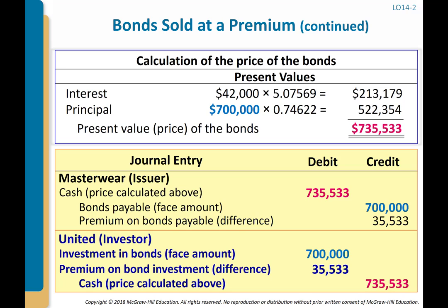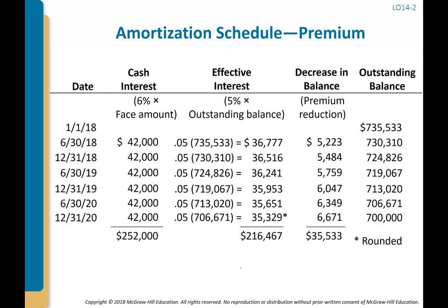At issuance of the premium bond: debit Cash for the amount received, credit Bond Payable for $700,000, and credit Premium on Bonds Payable for $35,533. On the balance sheet, the premium adds to the carrying value: $700,000 plus $35,533 gives a carrying value of $735,533. Unlike the discount which is subtracted, the premium is added to get the net carrying value.